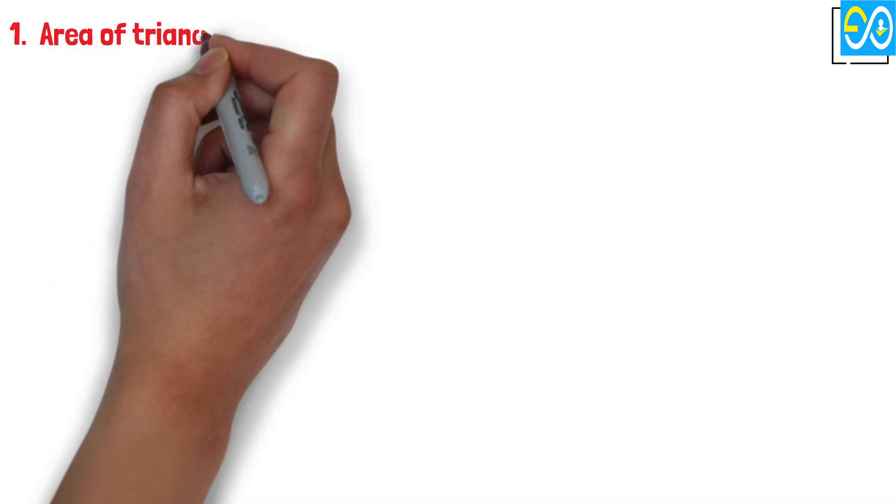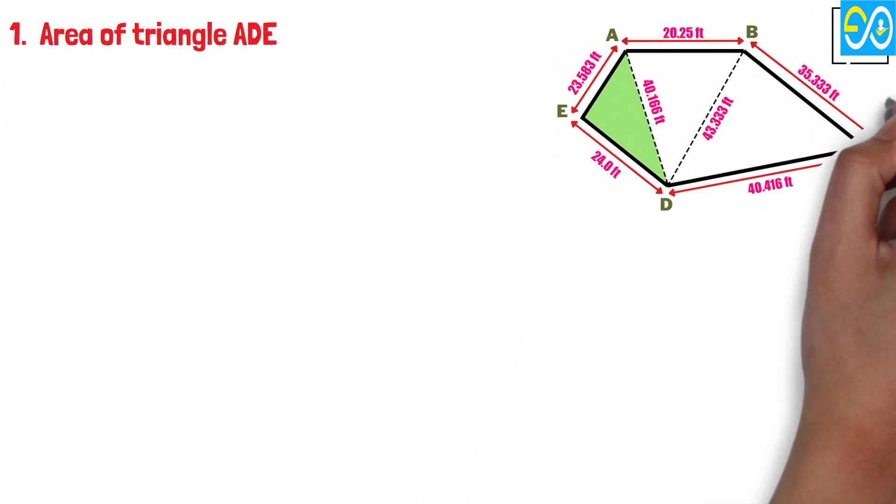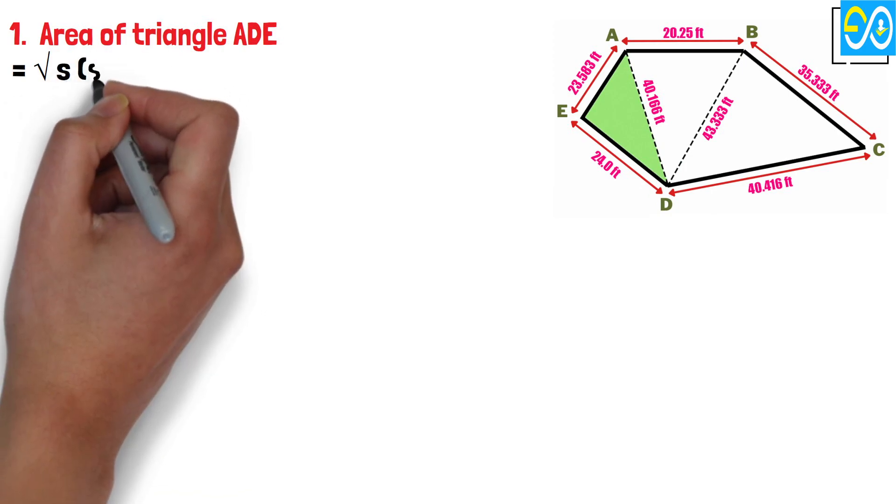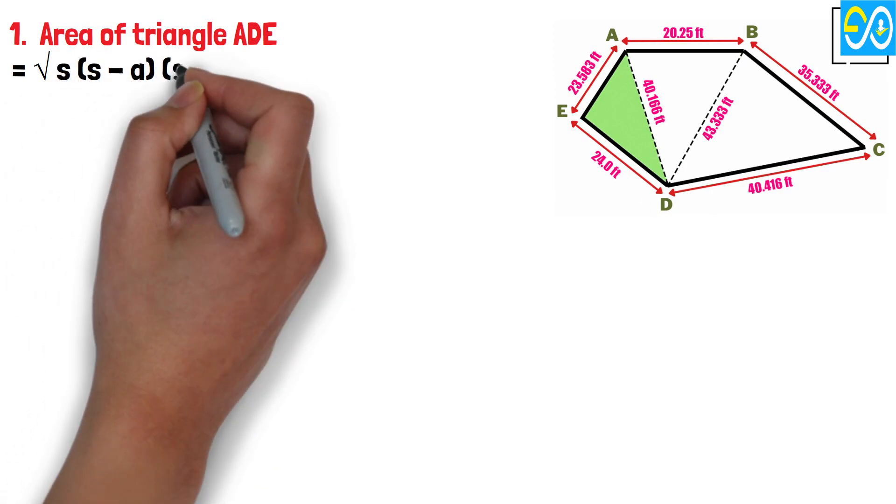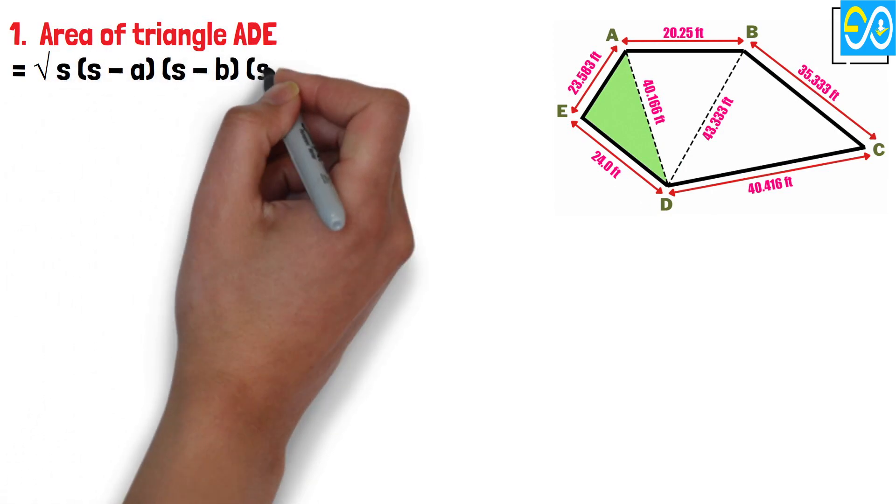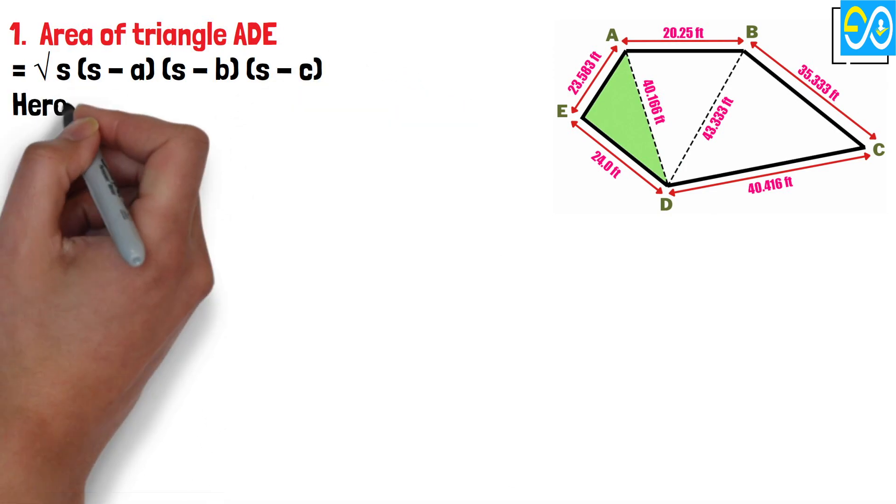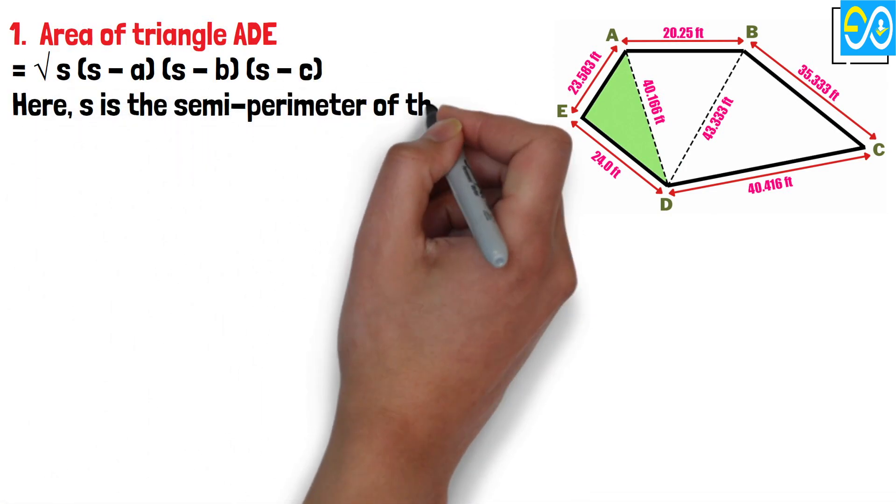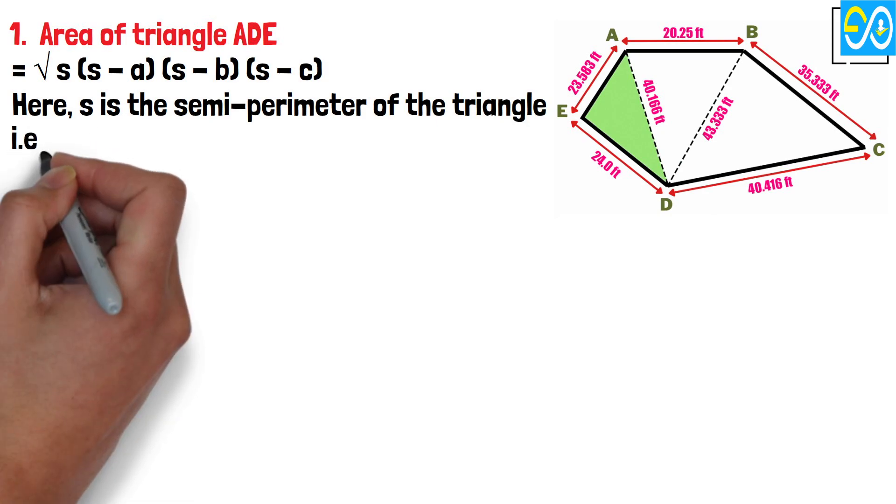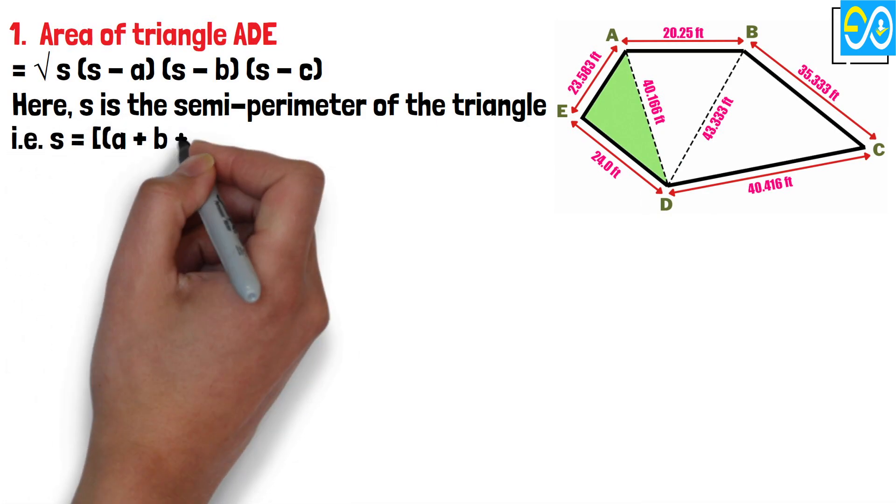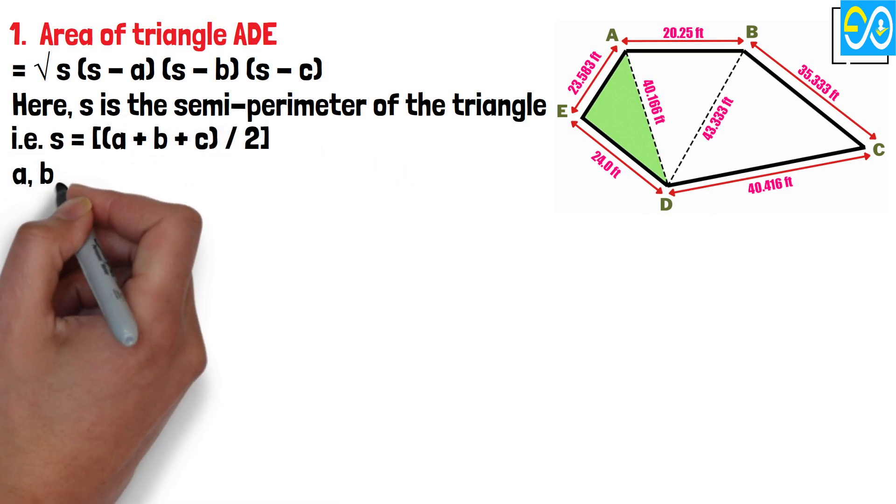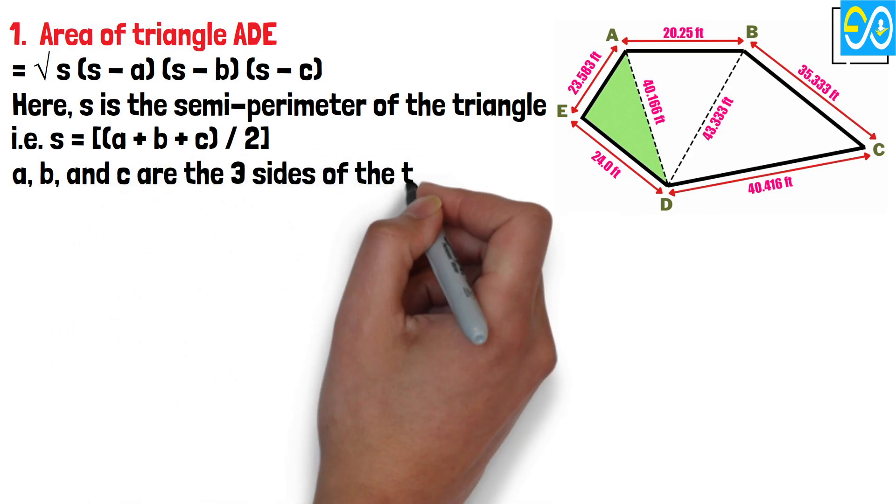1. Area of triangle ADE equals square root S times (S minus A) times (S minus B) times (S minus C). Here, S is the semi-perimeter of the triangle. That is, S equals (A plus B plus C) divided by 2. A, B, and C are the three sides of the triangle.